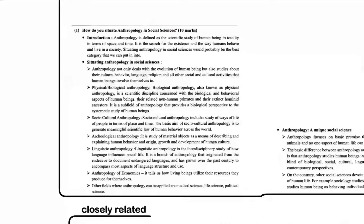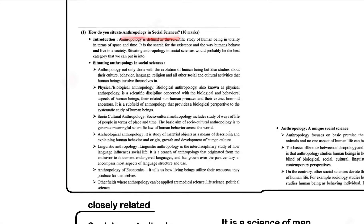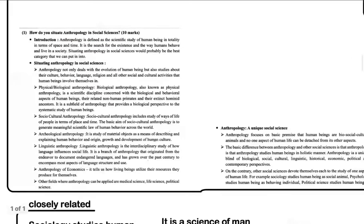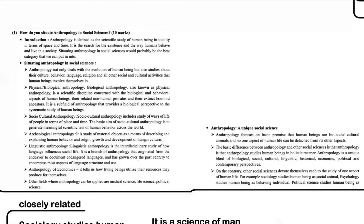Here is a 10-marker question: 'How do you situate anthropology in social science?' In the introduction, mention what anthropology is — the scientific study of man in totality in terms of time and space. Then mention what social sciences are: the study of human society concerning human behavior and culture, an academic discipline researched at university level, with branches such as economics, geography, history, political science, psychology, sociology, and archaeology.